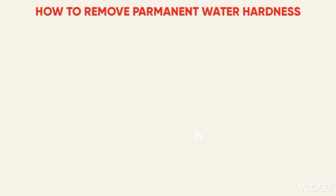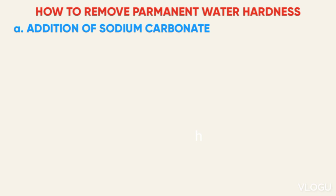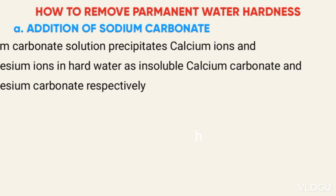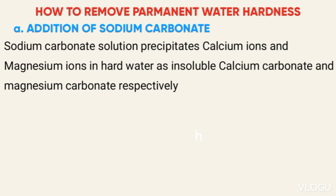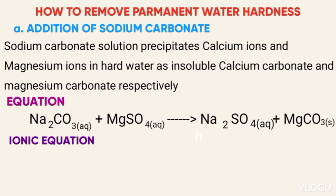Permanent water hardness can be removed by: A. Addition of sodium carbonate. Sodium carbonate precipitates calcium ions and magnesium ions as insoluble calcium carbonate and magnesium carbonate respectively. The equation is shown below.